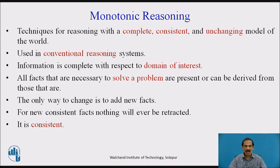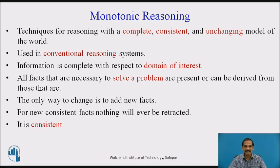Monotonic reasoning involves techniques for reasoning with a complete, consistent and unchanging model of the world. It is used in conventional reasoning systems. AI reasons to finally deduce certain things which are required in the form of inferences. Information is complete with respect to the domain of interest here.